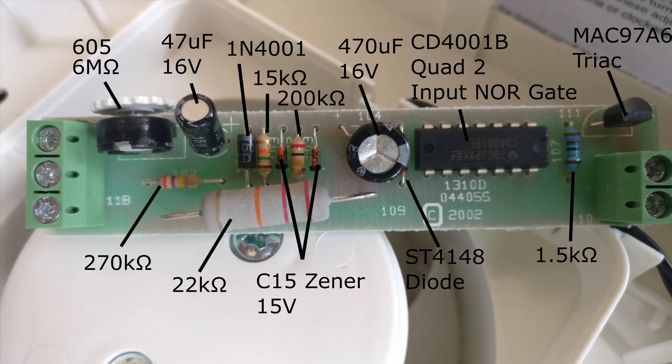The potentiometer had a 605 marking leading me to believe this was a 6 megaohm potentiometer. This was a bigger value than I was expecting but I confirmed it by measuring it with my multimeter as well as finding out the design of the circuit which we'll talk about later on.